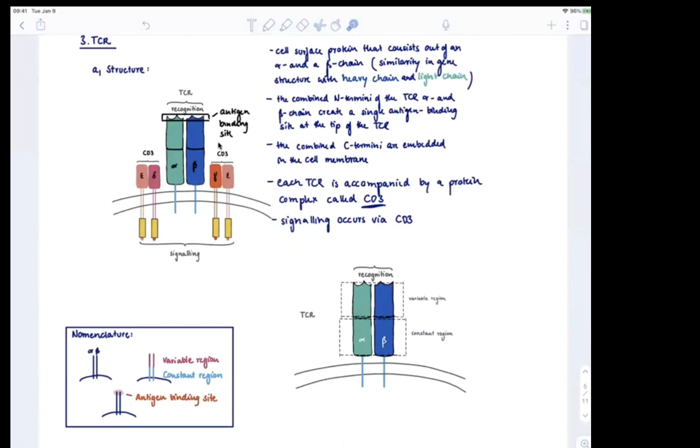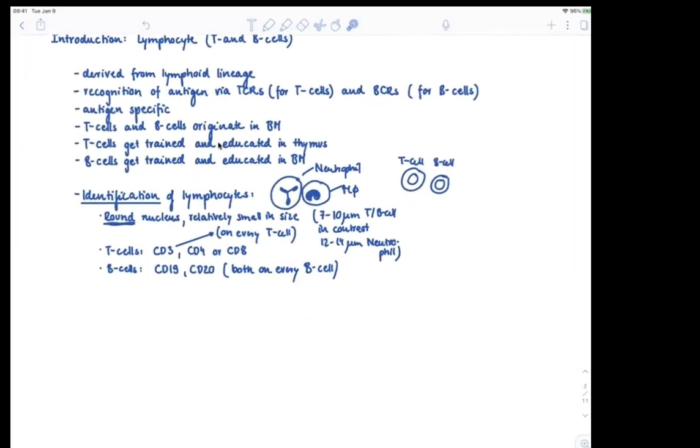And just as a quick mnemonic for how to remember all these numbers: let's go back to our original site where we had all these identification tags. You can see CD3 is on every T-cell, and then we have two flavors, CD4 or CD8.